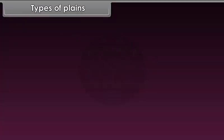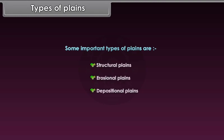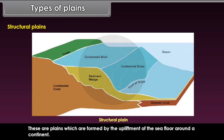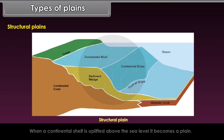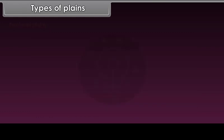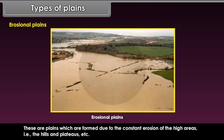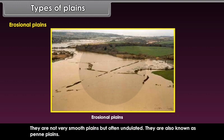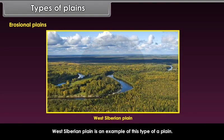Types of Plains. Some important types of plains are Structural Plains, Erosional Plains, and Depositional Plains. Structural Plains are formed by the upliftment of the sea floor around a continent; when a continental shelf is uplifted above sea level, it becomes a plain. Erosional Plains are formed due to the constant erosion of high areas such as hills and plateaus. Due to gradual wearing out of the higher areas, they come down to the level of plains. They are not very smooth but often undulated, and are also known as peneplains. The West Siberian Plain is an example of this type.